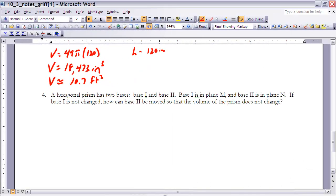All right, finally, let's look at example four. It says hexagonal prism has two bases, base one and base two. Base one is in plane M and base two is in plane N. If base one is not changed, how can base two be moved so that the volume of the prism does not change?